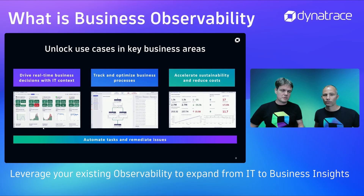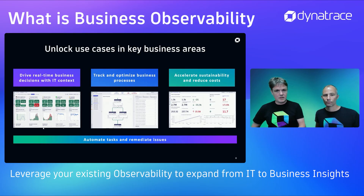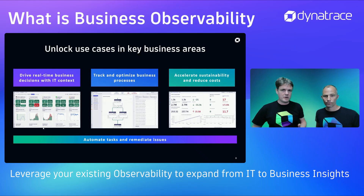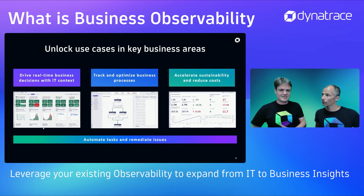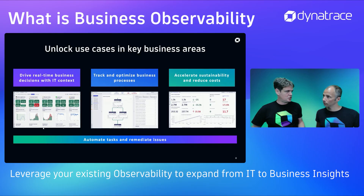When we talk about business observability at Dynatrace, there are three core pillars. First: real-time business decision making — giving you all this data always in context with IT, so no longer are you sitting in the same room trying to figure out who has a problem or whose data set is the right one. Second: business processes, which are really hard to follow given that IT is changing constantly with the dynamics of cloud.